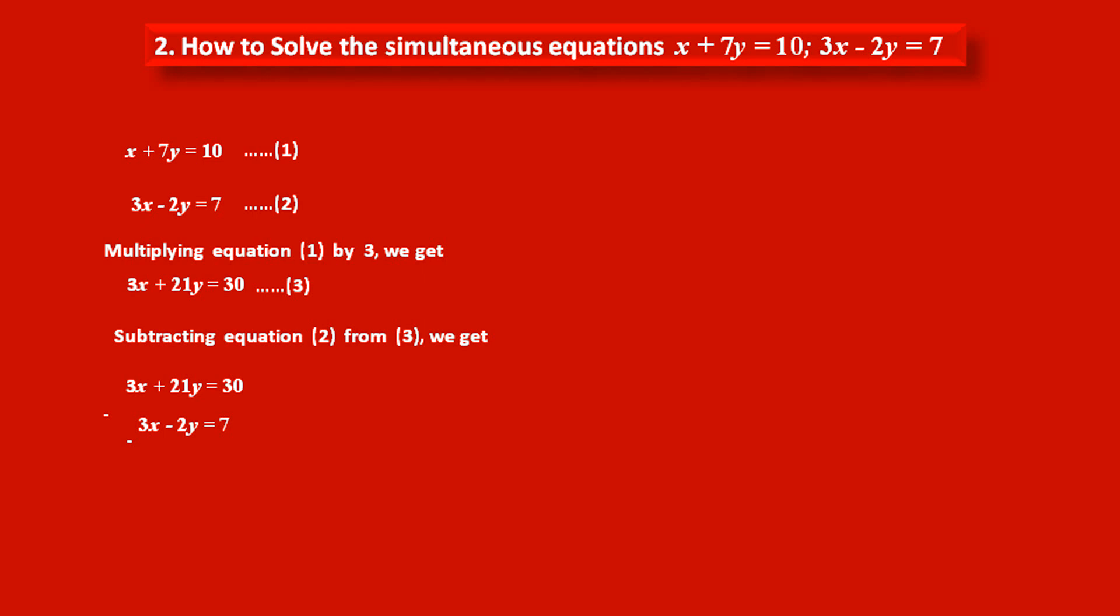That means, first term 3x which is positive becomes negative. Second term, which is minus 2y, means negative, so it becomes positive. And third term, which is given as positive, becomes negative. So in the subtraction process, 3x minus 3x cancel each other. 21y plus 2y becomes 23y, equals 30 minus 7, becomes 23.